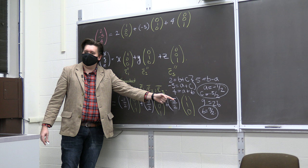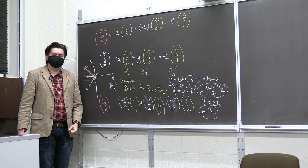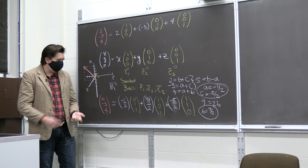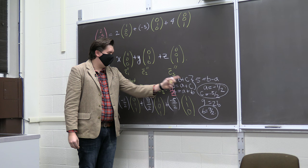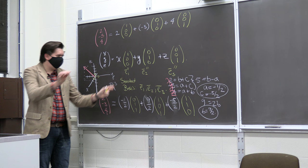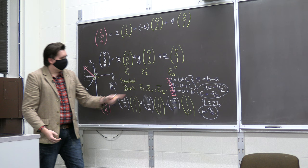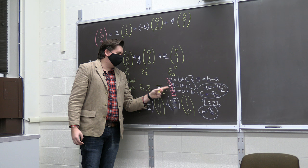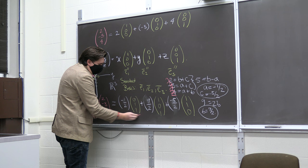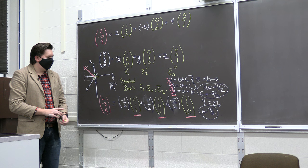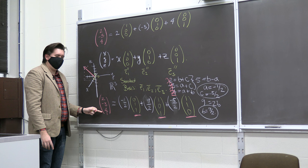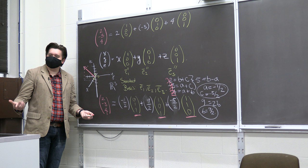For an arbitrary vector (x, y, z), you'd just solve the analogous system, and you can always find a unique solution for a, b, and c in terms of x, y, and z. So this is indeed another basis — or at least the span of these three vectors gives you everything in R3.